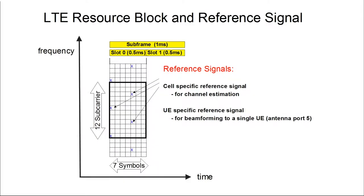In LTE with a 20 MHz bandwidth we have 1,200 sub-carriers. If the client needs to know which sub-carriers carry information, all that signaling would be excessive. So it's divided into resource blocks with 12 sub-carriers over frequency and 7 symbols. In LTE that amounts to half a millisecond. In 5G it is also 12 sub-carriers, however with a 30 kHz sub-carrier spacing the block gets wider in frequency and shorter in time.